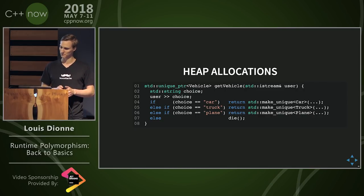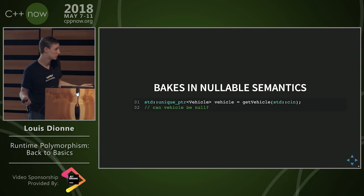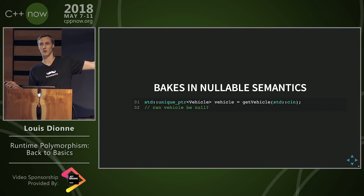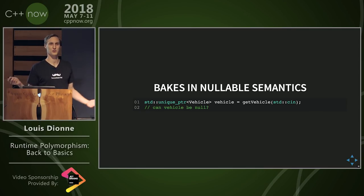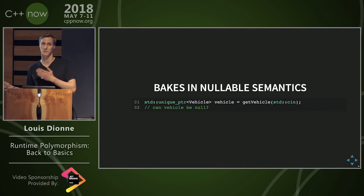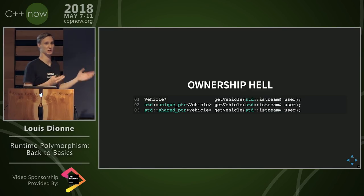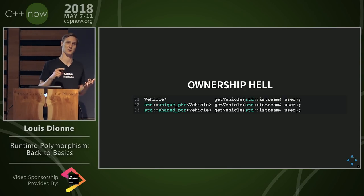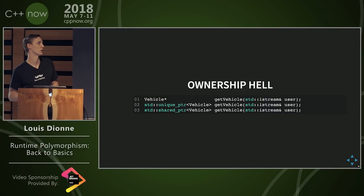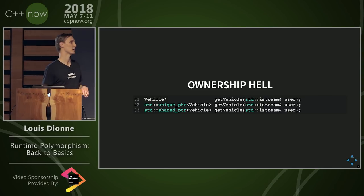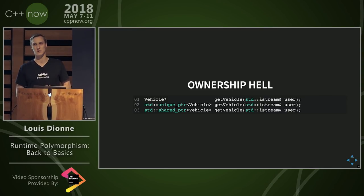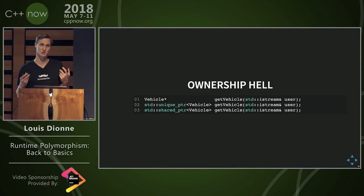Because we're using pointers, suddenly all of our objects are nullable — a pointer can be null, so you always have to check or live dangerously. You wanted to have anything that satisfies a vehicle interface, not anything that satisfies it or nothing at all. And when we start using pointers, ownership becomes a problem. It raises questions we suddenly have to answer: who owns this memory? You have to decide on a smart pointer type or a raw pointer. It just forces us to answer questions we shouldn't have to answer when doing polymorphism.